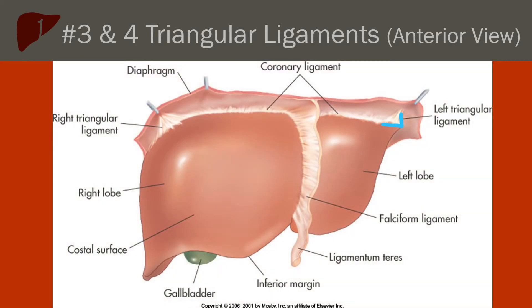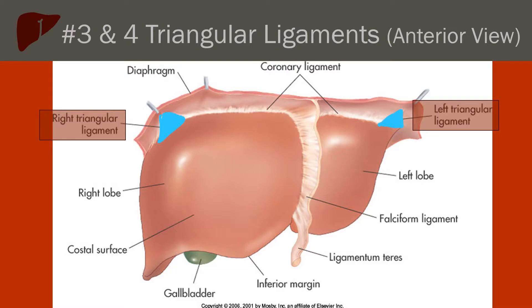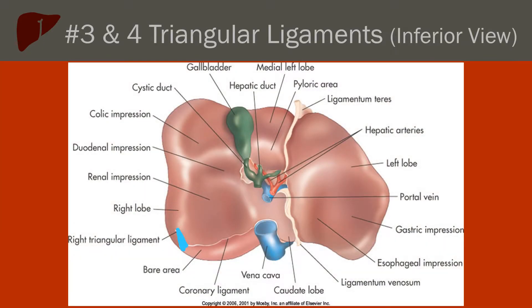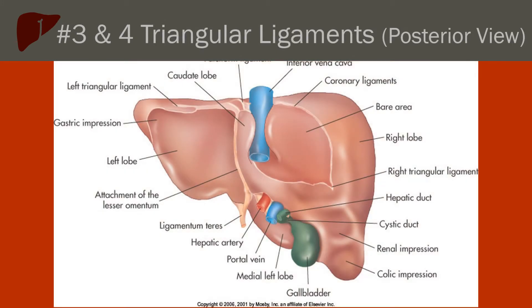The third and fourth ligaments are the triangular ligaments. The right and left triangular ligaments are named for their shape and location. They sit on opposite ends of the coronary ligament and attach the liver to the diaphragm. The right triangular ligament sits near the bare area of the liver, and the left triangular ligament is at the superior border of the left lobe, anterior to the esophagus. The inferior view exhibits the right triangular ligament arising from the coronary ligament at the bare area. The posterior view shows both triangular ligaments — the left from the coronary ligament on the superior edge of the left lobe, and the right near the bare area.